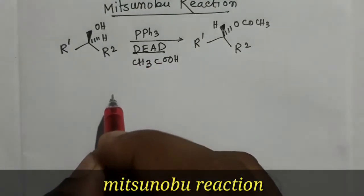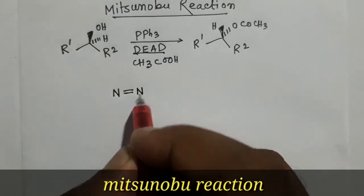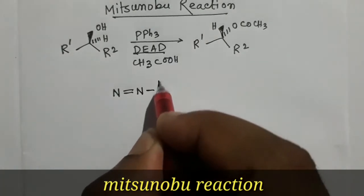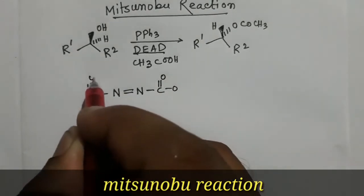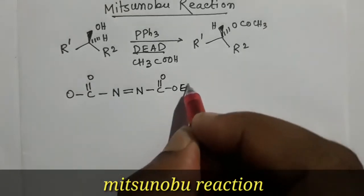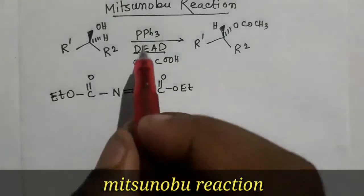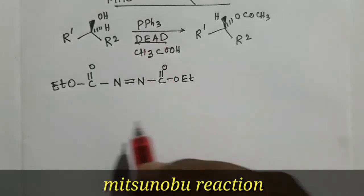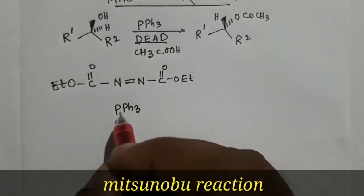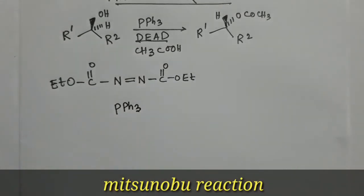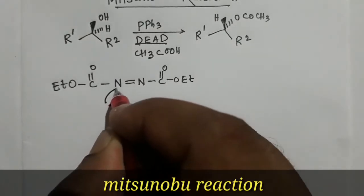Here, diethylazodicarboxylate contains a nitrogen double bond nitrogen — this is the azo group — and dicarboxylate with C=O groups. This is the diethyl ester portion. Triphenylphosphine is also present. Triphenylphosphine has a lone pair on the phosphorus atom.